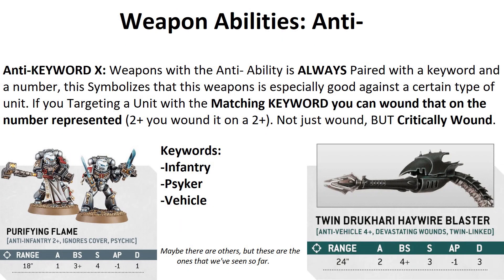Anti: weapons have this ability as Anti plus a keyword plus a number with a plus sign — for example, Anti-Infantry 3+. If targeting an infantry unit, this weapon wounds on a 3+ regardless of the enemy's toughness or the weapon's strength characteristic. It also scores critical wounds when the keywords match. Examples: Anti-Vehicle 4+ wounds and critically wounds vehicles; Anti-Psyker 2+ wounds a psyker on a 2+ and scores a critical wound — really strong, since you can wound Magnus on a 2+ with a simple stake from a sister or an inquisitor.